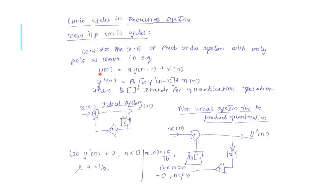These oscillations are due to round-off errors in multiplication and overflow in addition. We are going to focus first on round-off errors in multiplication. In recursive systems, if the system output enters a limit cycle, it will continue to remain in the limit cycle even when the input is made zero. Such limit cycles are called zero input limit cycles.